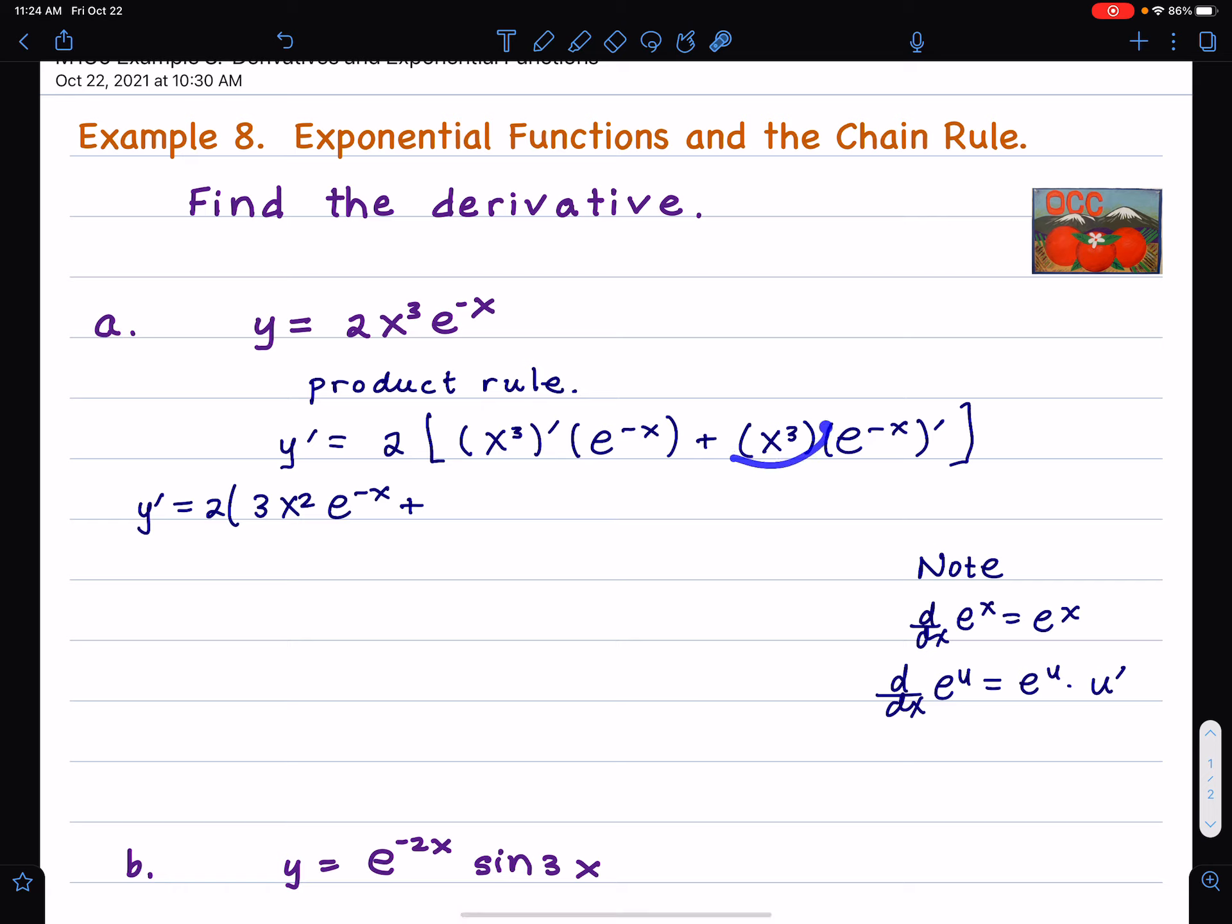y prime equals 2. The derivative of x to the 3rd power is 3x squared. Then I copy and paste e to the negative x, plus x to the 3rd, leave that alone, and then the derivative of e to the negative x. This negative x is u. So, we write down e to the u, which is e to the negative x. Then we take the derivative of negative x. The derivative of negative x is negative 1.